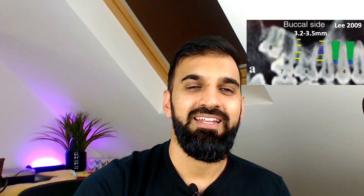The interradicular distance is arguably the more important factor when it comes to TAD insertion — how do you avoid hitting the roots? Again, the distance between the first molar and second premolar yields anatomically the greatest distance, from 3.2 to 3.5 millimetres, giving enough space to clear the interradicular distance. This is by Lee from 2009.